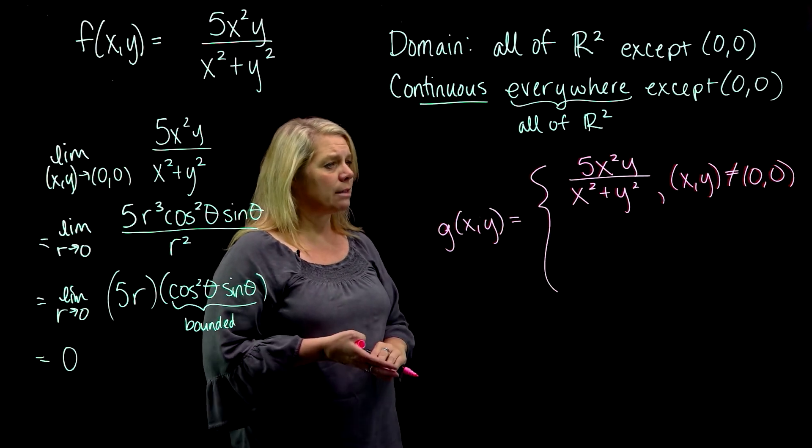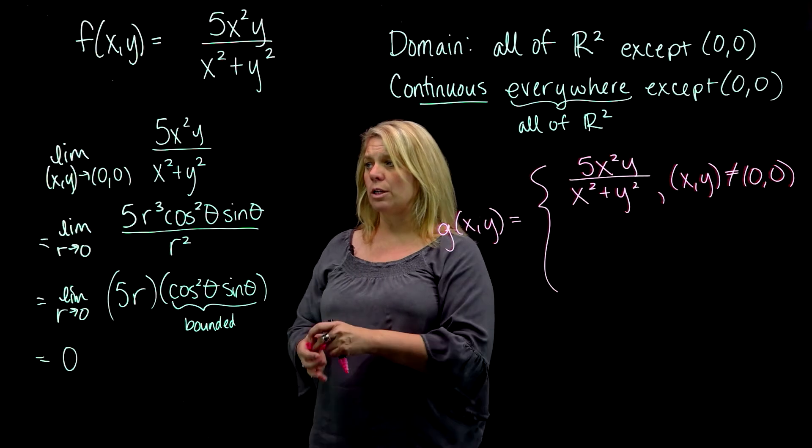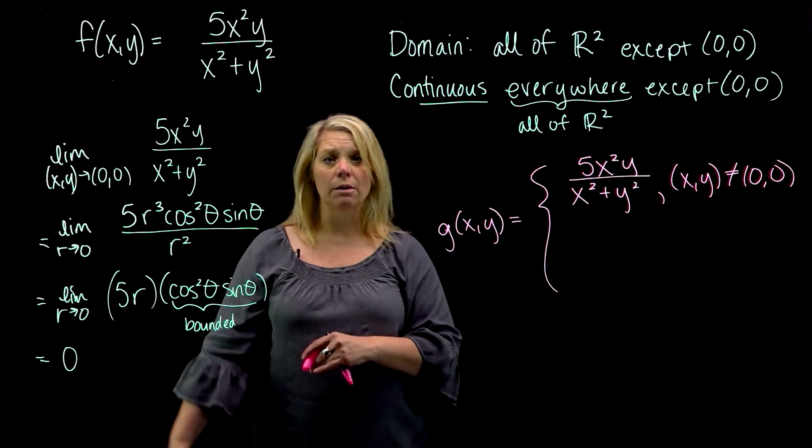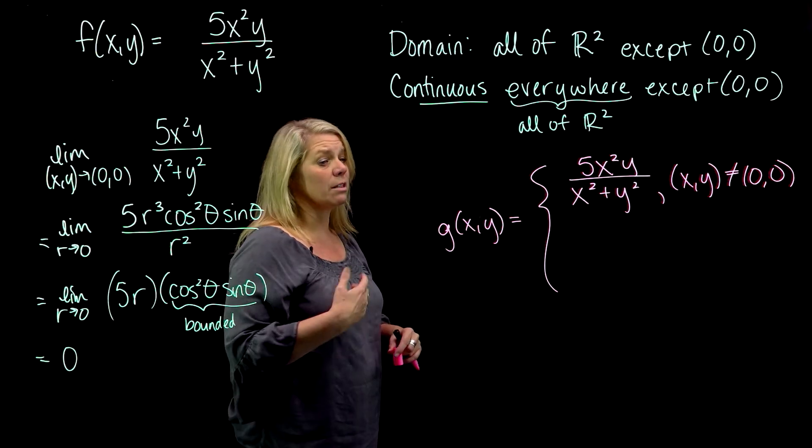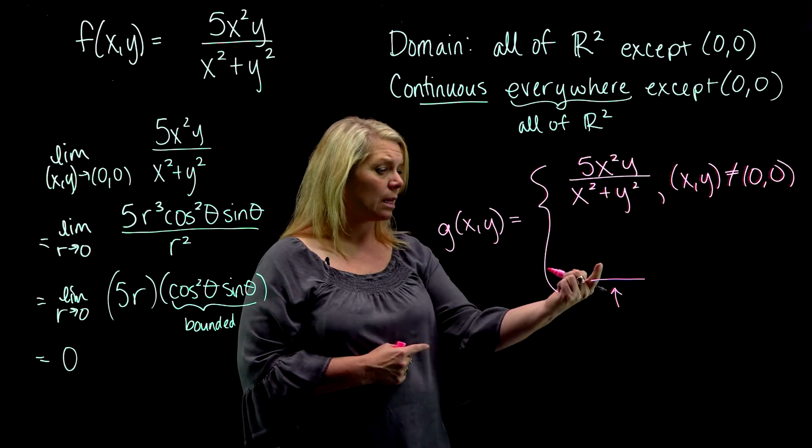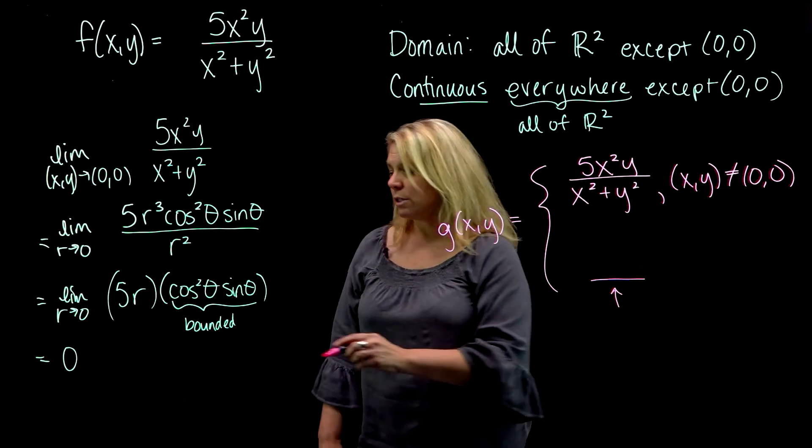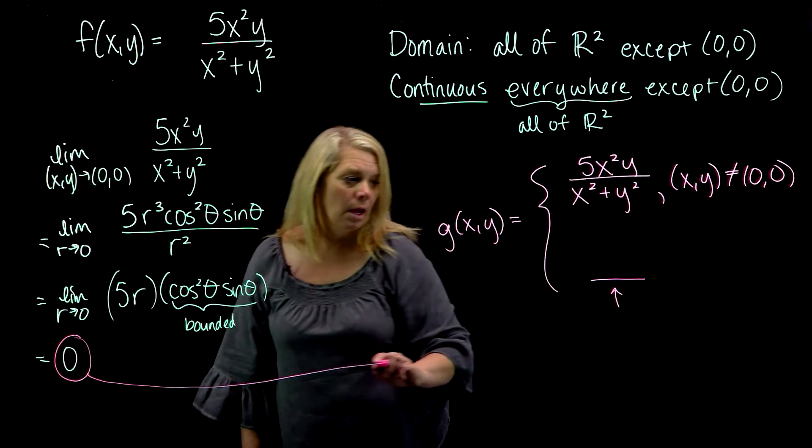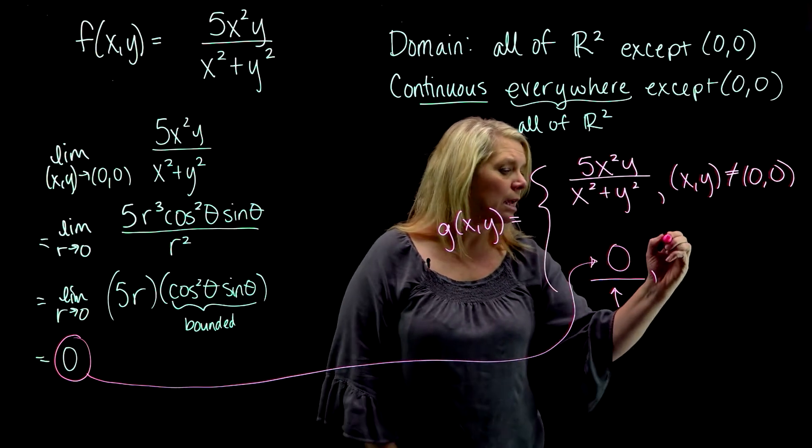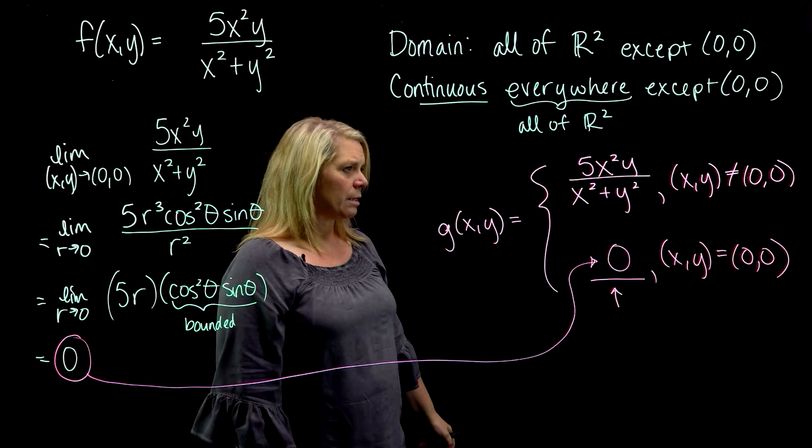And then what I want to do here is essentially fill in the hole. So I talked about that the graph of this function would have a hole at the origin when (x,y) approaches (0,0). z values approach zero, but they're not actually equal to zero. What I want to do with this new function here is fill in the hole. So I'm going to define that so that the output that goes right here in this blank is going to be the z value that everything's approaching as we get close to that point. So I want to take this value and I want to put that right there. And that fills in the hole when the input is (0,0).